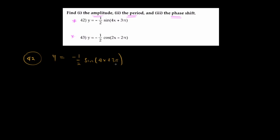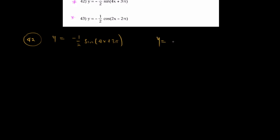The general form of a sine function is y equals a sine of omega x. But the functions we are given here have an extra term as the argument of the trigonometric function. So we also have a general form that takes into consideration that extra term.